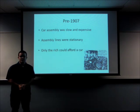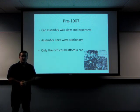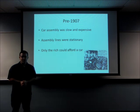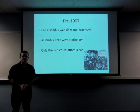Before 1907, car assembly was slow and expensive, requiring 12 hours for a rolling chassis to emerge from a factory. In comparison, by 1927, the same process only took 24 seconds. Assembly lines were stationary, which meant that workers had to carry heavy tools and parts to each vehicle, which was slow, inefficient, and often dangerous.